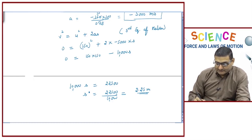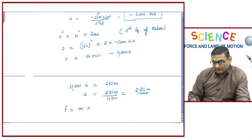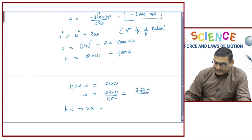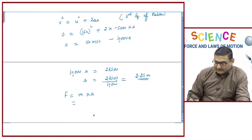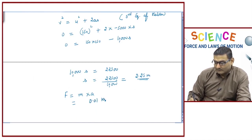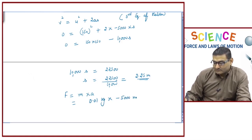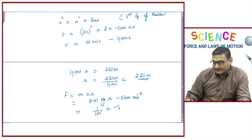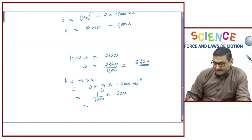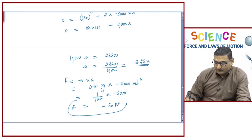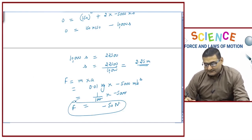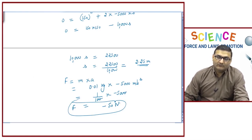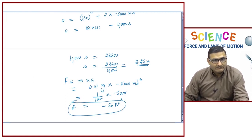Now calculating force using F = m × a: the mass is 0.01 kg and acceleration is −5000 m/s². So F = (1/100) × (−5000) = −50 newton. The magnitude of force is 50 N, and the negative sign indicates the force acts in the opposite direction — the block exerts a retarding force on the bullet.